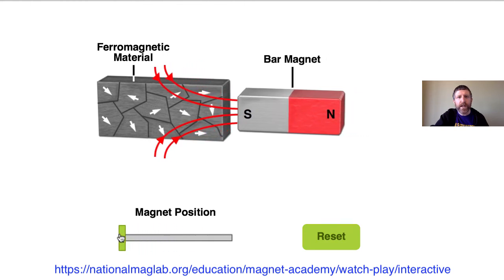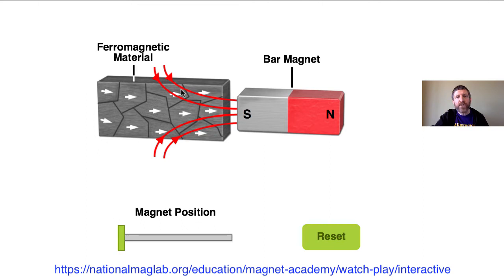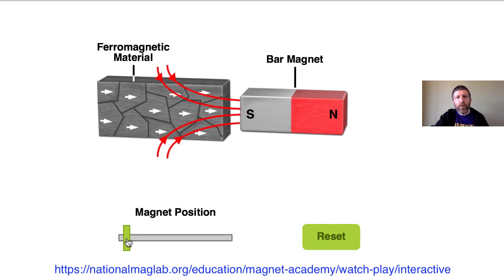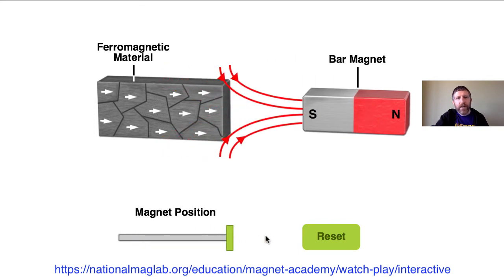Notice that the domains are starting to spin. What really happens is the domains that are aligned with the external field actually become bigger — they absorb more atoms at their edges — and the domains that are not aligned get smaller. All these domains are aligning with the external magnetic field, and even when I pull away the permanent magnet, those domains stay aligned. So now this thing is a new permanent magnet.